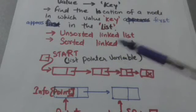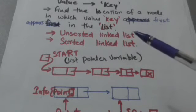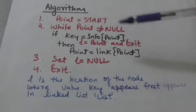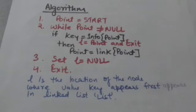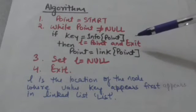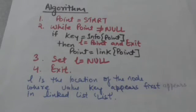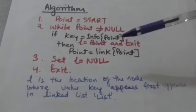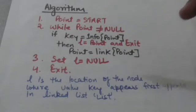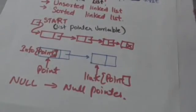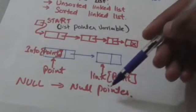The location of the node whose content has matched with the given value is the required location where the given value first appears in the linked list. This is the algorithm to find the location L of the node where a given value key first appears in the linked list. If the value key is not found in the linked list, then the value of L will be set to null, which represents a null pointer — any invalid address.